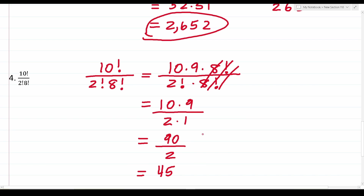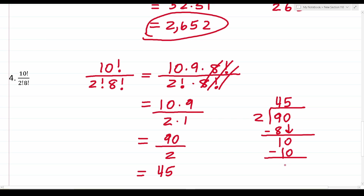You should be able to work 90 divided by 2 out mentally, but I'll show it off to the side. Reading the fraction as long division: how many times does 2 go into 9 without going over? That's 4 times — 2 times 4 is 8, remainder 1. Bring down the 0: how many times does 2 go into 10? That's 5 times, with no remainder. So that gives us 45. Therefore, 10 factorial over 2 factorial times 8 factorial is 45.